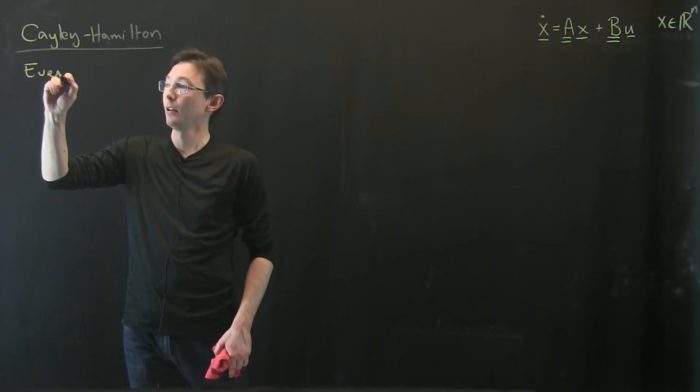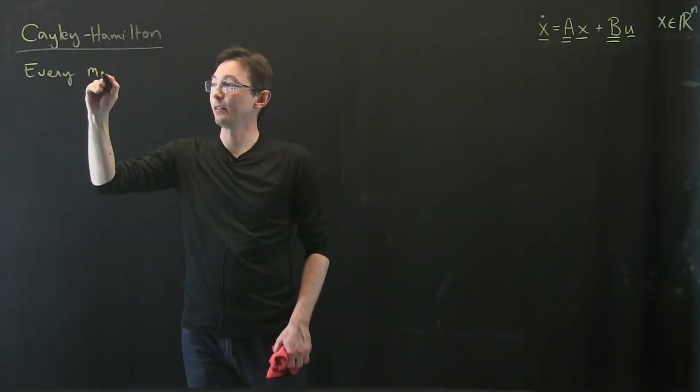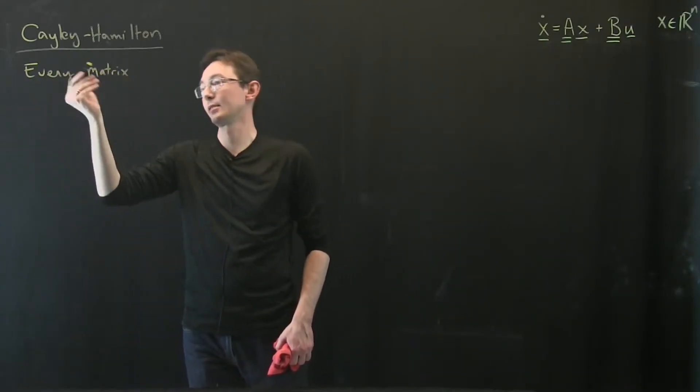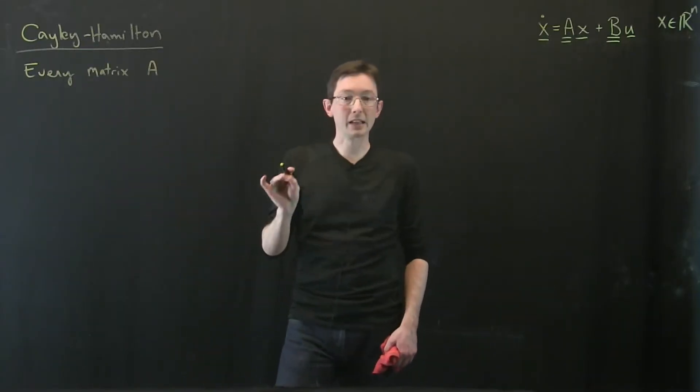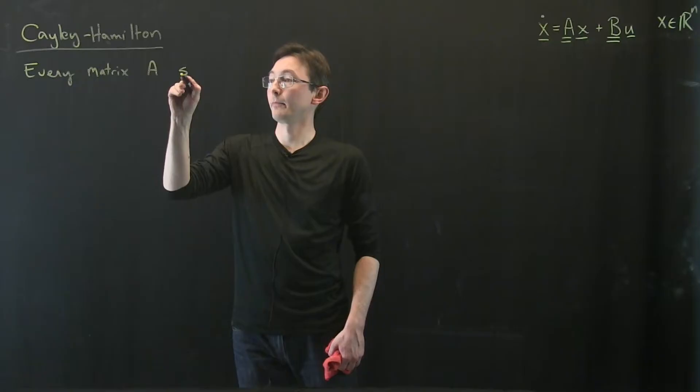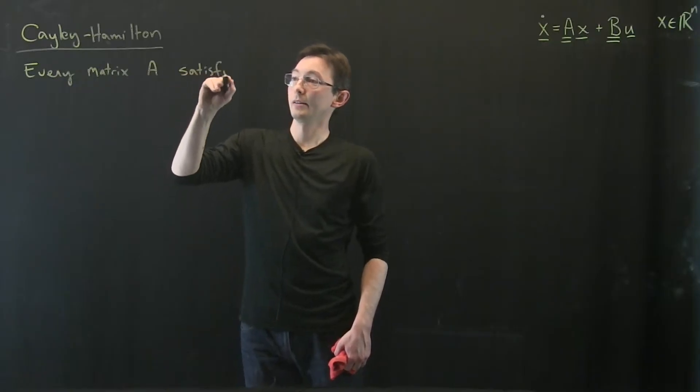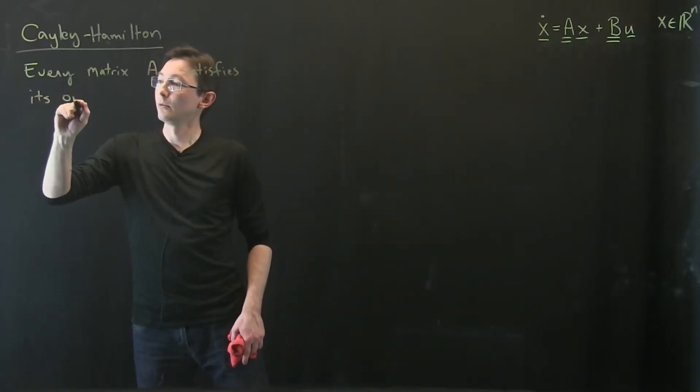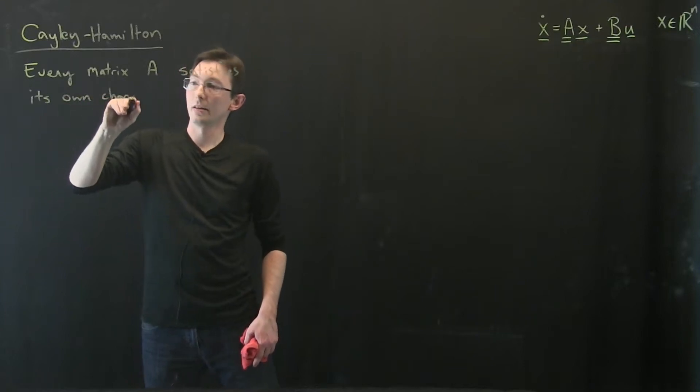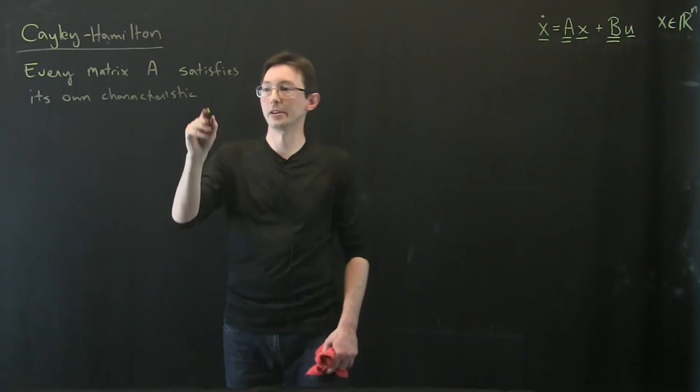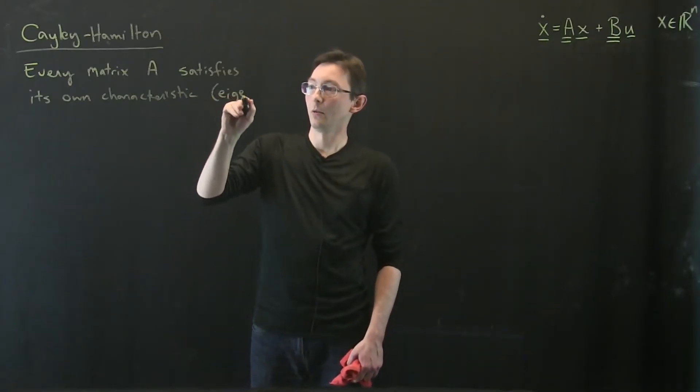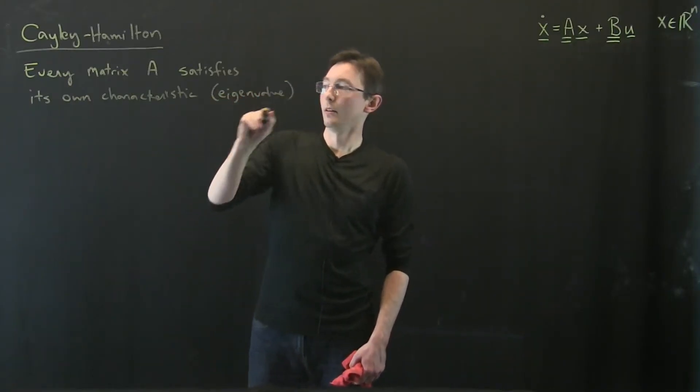It says that every square matrix A satisfies its own characteristic equation. Satisfies its own characteristic or eigenvalue equation.